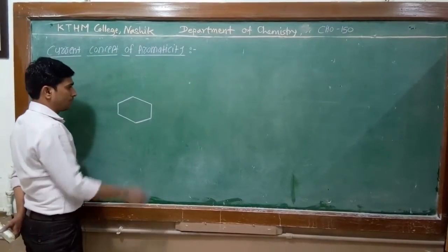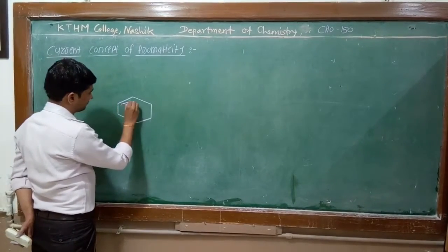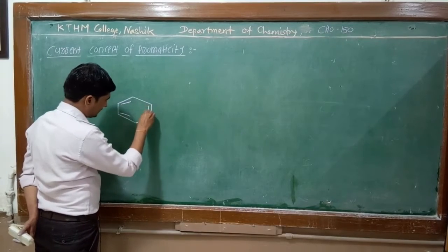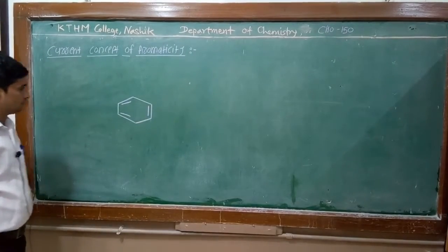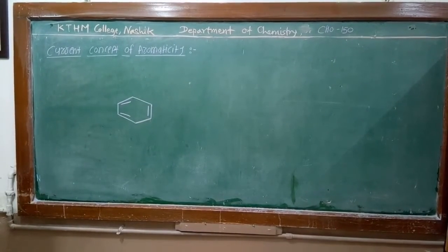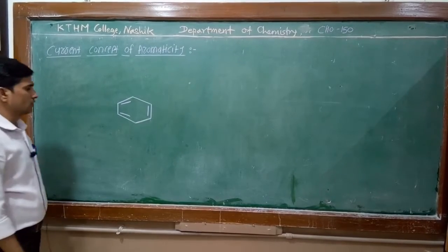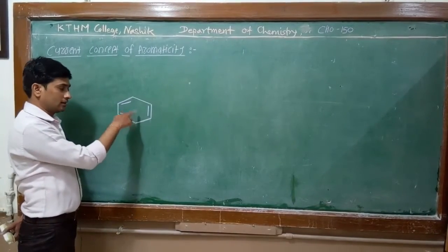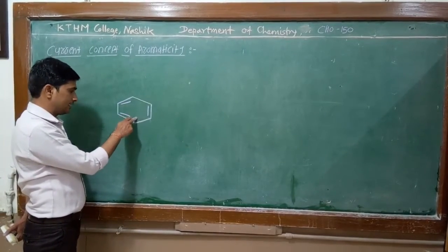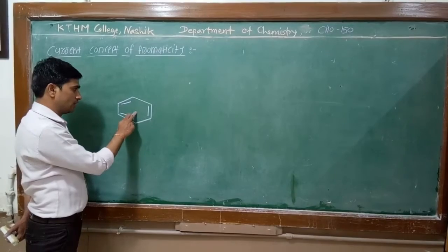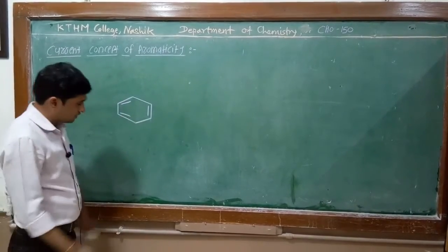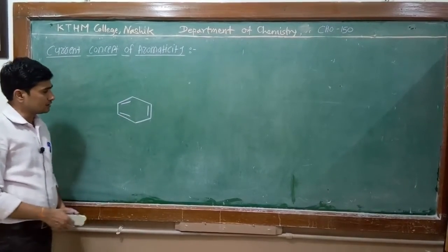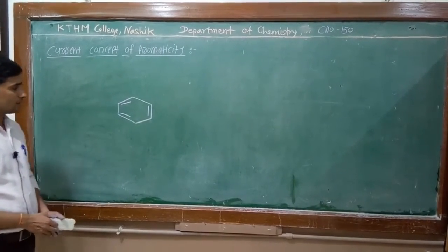A simple example is benzene. According to the Hückel rule, we know that benzene is planar, cyclic, fully conjugated, and containing 6 pi electrons. Therefore this is an aromatic compound.